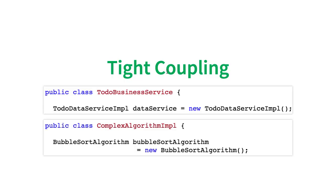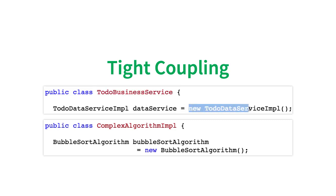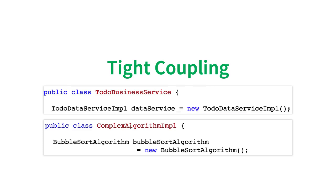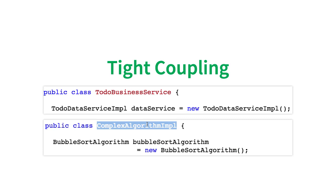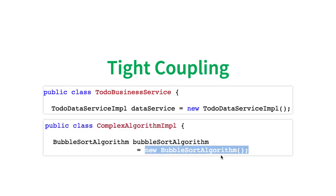Let's look at an example of tight coupling. TodoBusinessService is directly creating an instance of the TodoDataServiceImpl. The ComplexAlgorithmImpl is creating an instance of the BubbleSortAlgorithm. This ComplexAlgorithmImpl does a lot of complex logic — you give it some data, it does complex processing, and part of that logic is to sort the data. Among all the things it does, it is directly creating a BubbleSortAlgorithm instance and using it to sort the data. That is what is called tight coupling.